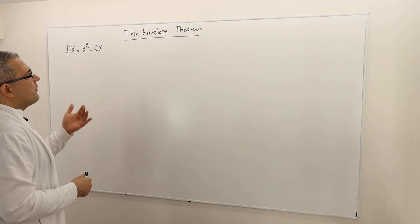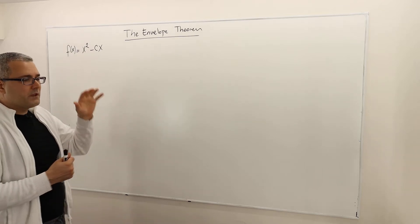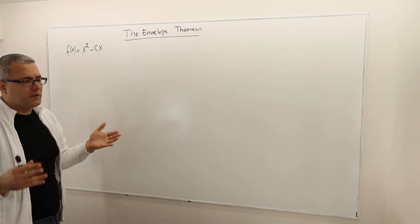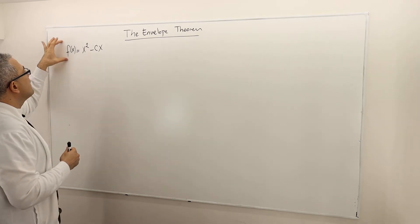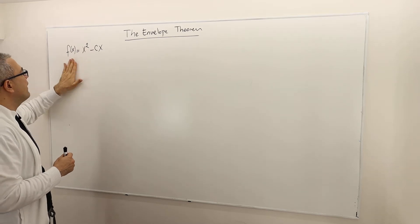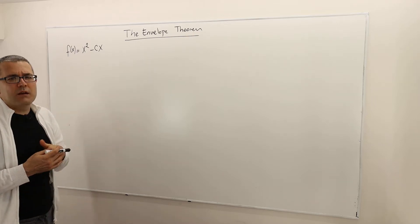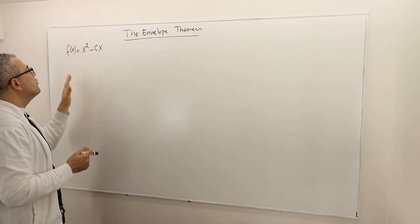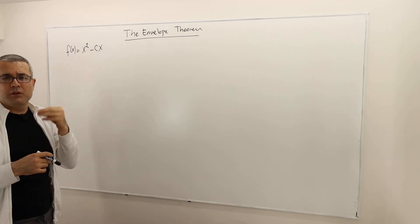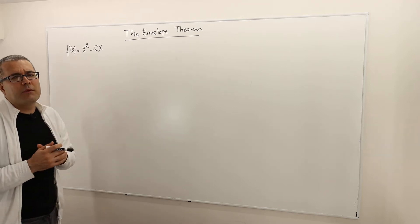The envelope theorem is basically about implicit functions. Let's consider the one-variable case first, then later I'll talk about the multi-variable case. In a very simple example, suppose I have a function f of x, which is equal to x squared minus c times x, where c is some fixed parameter. You may think of this as your utility function, where x is the choice variable — how much of good x you consume — and c is just a constant parameter.